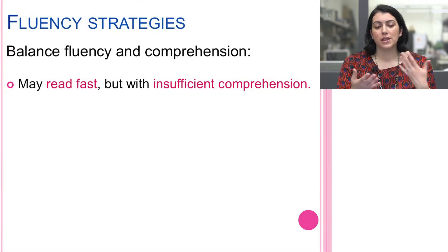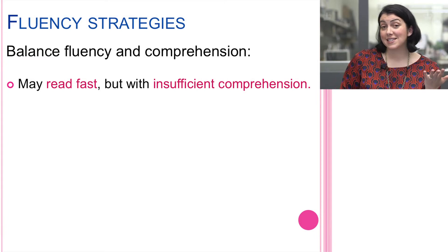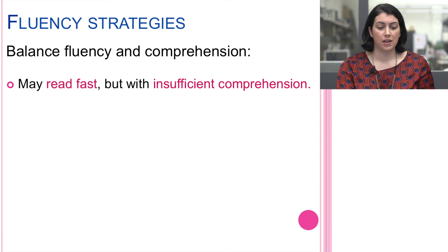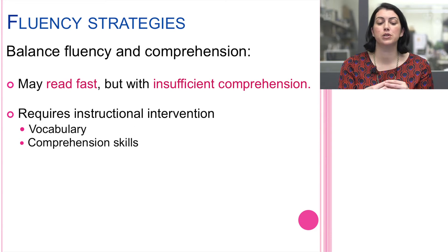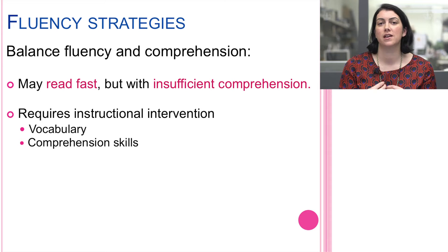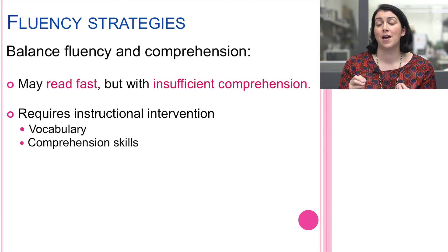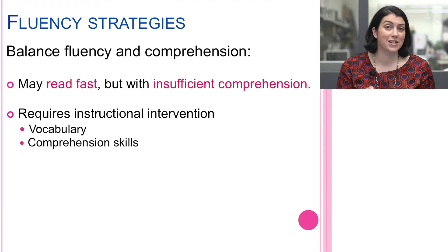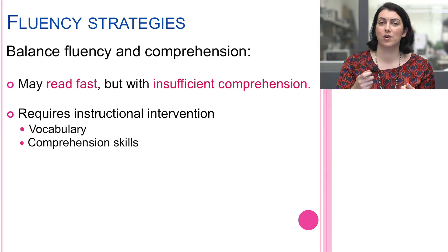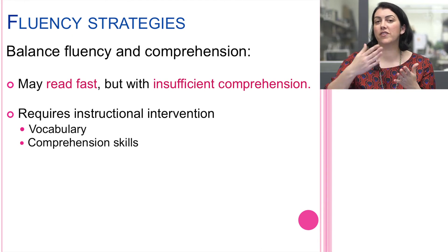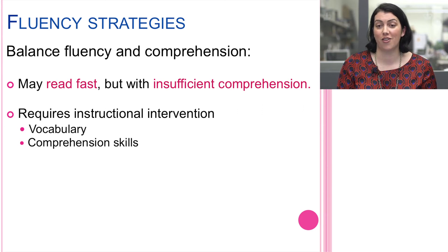It's important that we really balance fluency and comprehension. A student may read fast but with insufficient comprehension, so what we want to do is use interventions to help students access the vocabulary and their comprehension by getting through the text in a smooth way, by understanding the punctuation and when to pause. All of those subtle cues that we as fluent readers take for granted can really prevent a child from understanding the full intention that the author had.